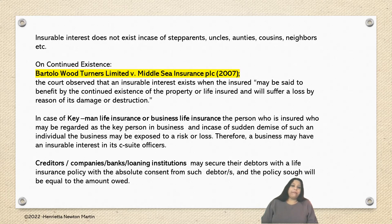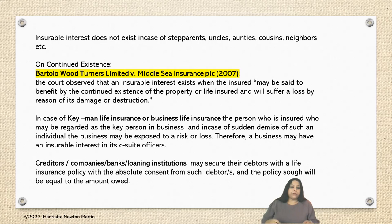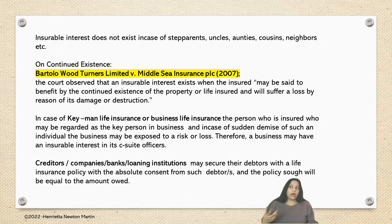Giving an example of key man life insurance or business life insurance — every business might have a key person, and in case that person dies, it might jeopardize the affairs of the company or business. Certain businesses may seek or secure a key man life insurance policy, where the person insured may be regarded as a key person, sometimes even the C-suite officers — the highest level managing directors or the CEO of the company. Companies may secure an insurance policy in their favor, coming under the ambit of key man life insurance or business life insurance. Therefore, a business may have an insurable interest in their C-suite officers.